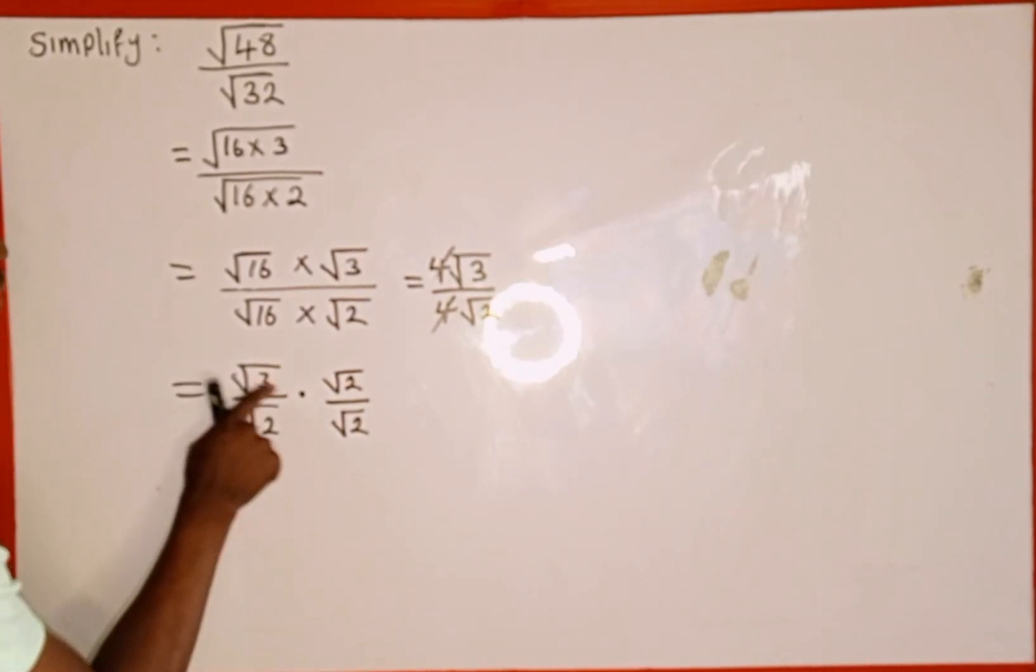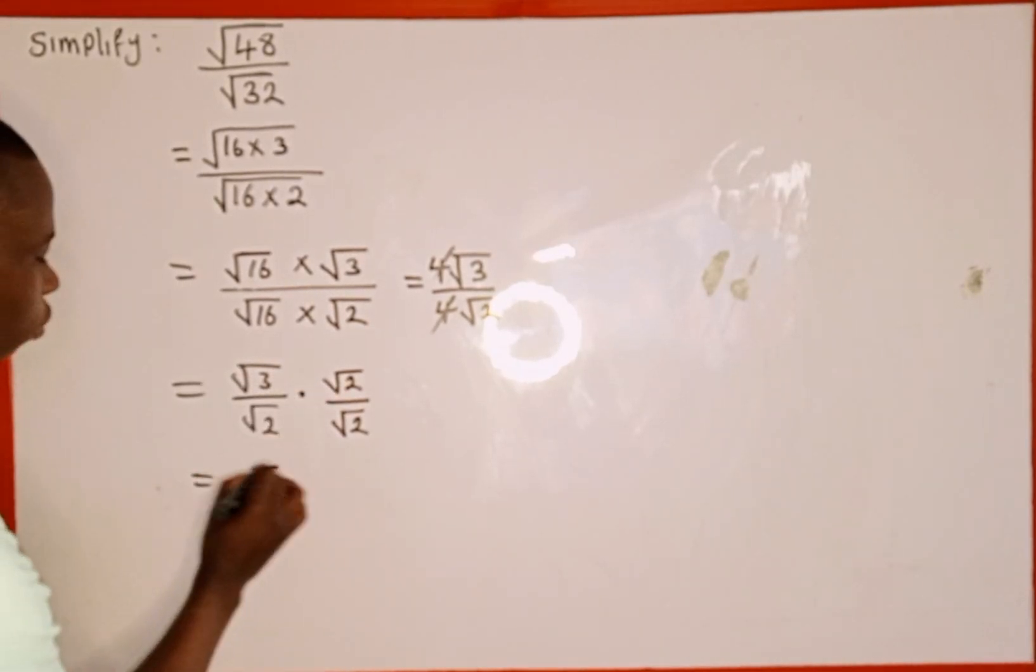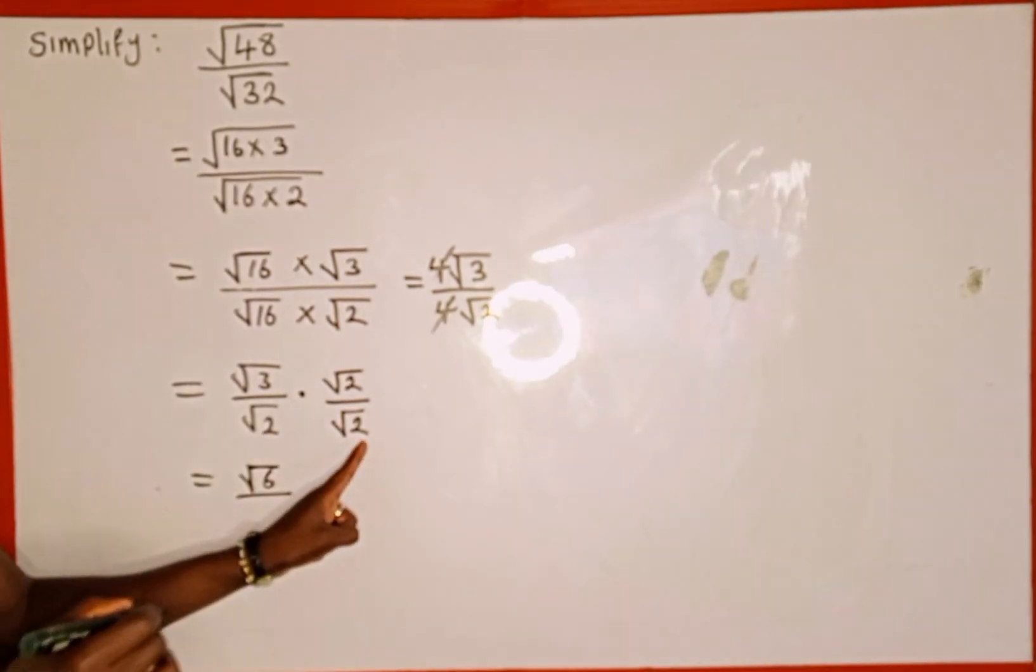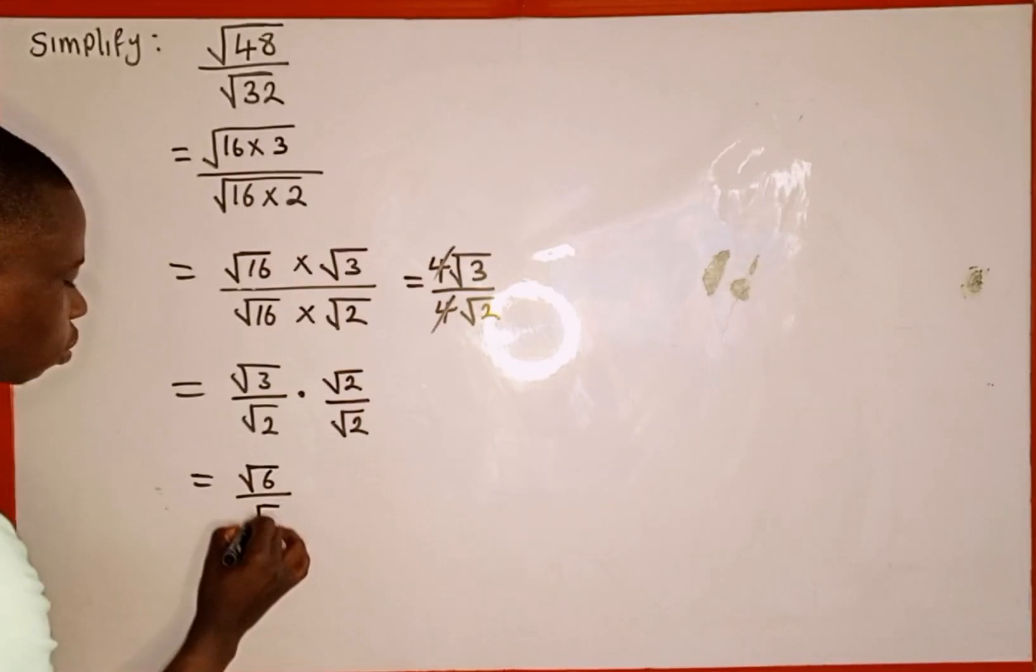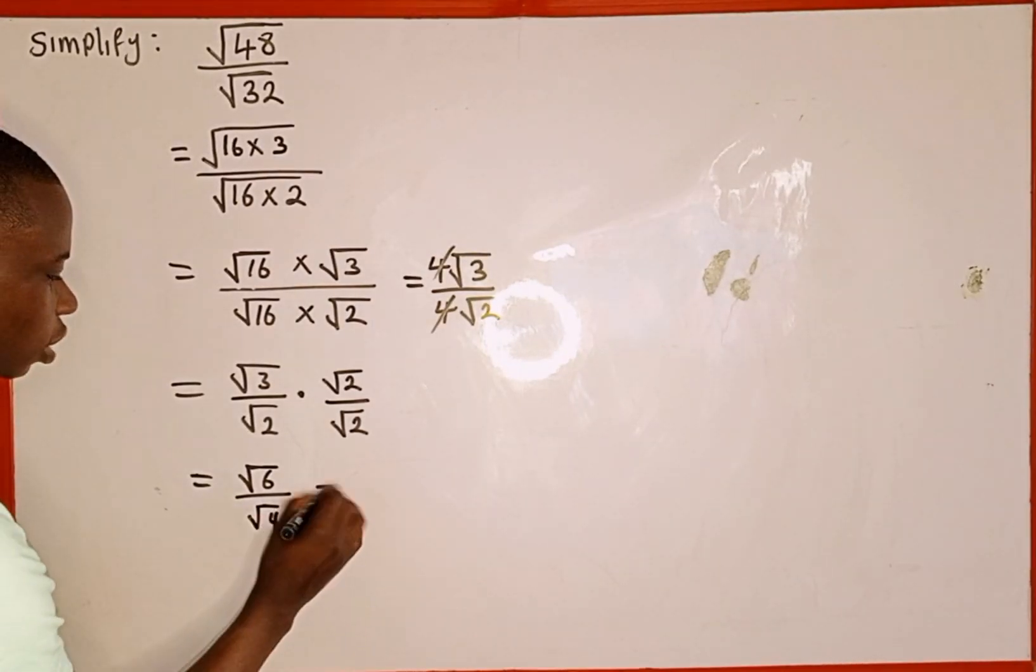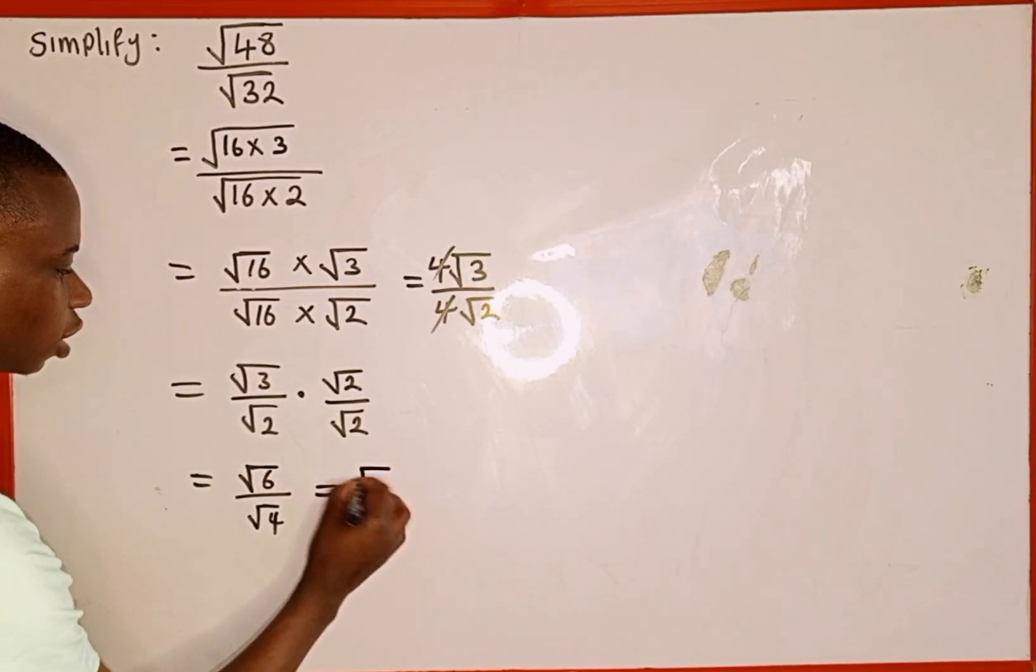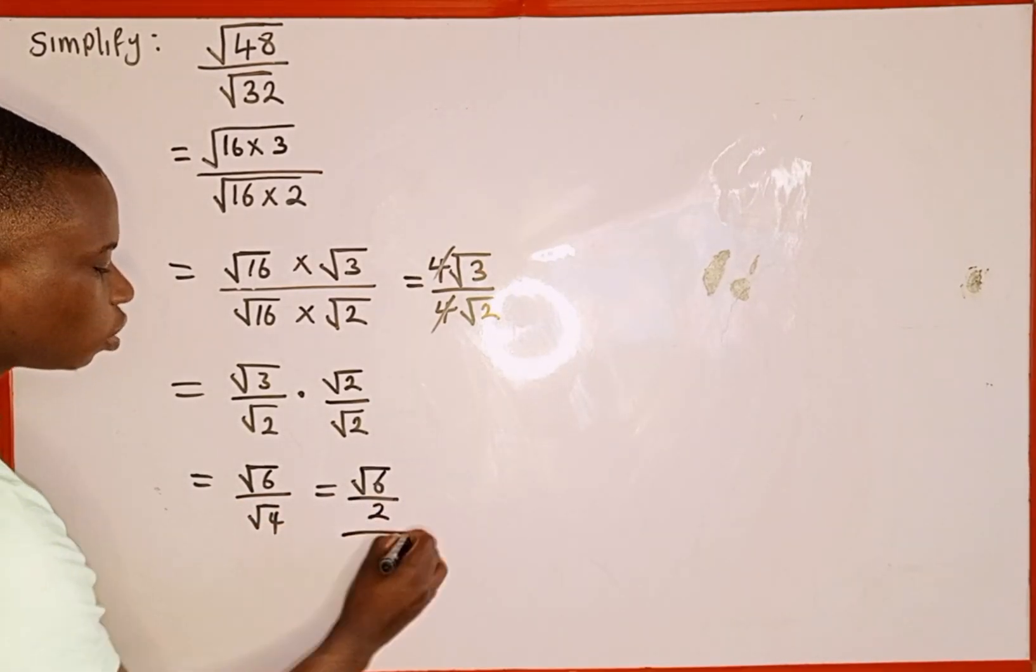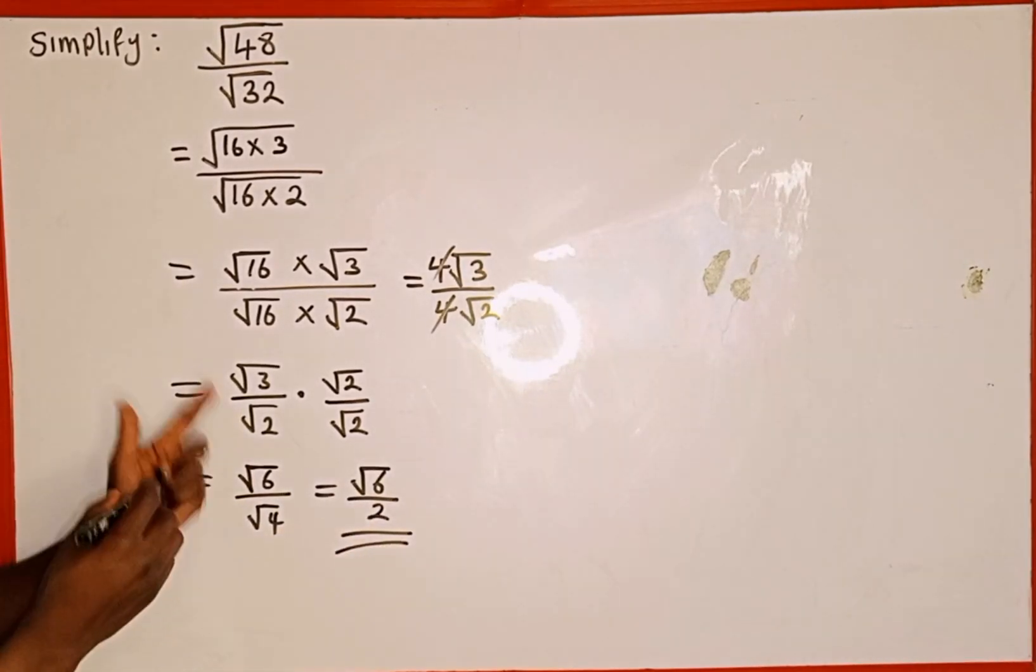So we're going to have what? Square root 3 multiplied by square root 2 is going to give us square root 6. Then divided by what? Square root 2 multiplied by square root 2 is going to give us square root 4. Then which is going to be equal to square root 6. 6 is not a perfect square. Then square root 4 is the same as 2. So this is the simplification of this surd expression.